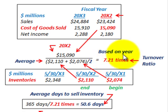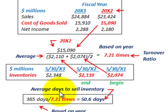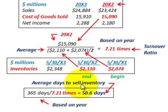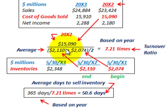Dividing the cost of goods sold for 20x2 by that average inventory gives a turnover ratio of 7.21 times. For the average days to sell inventory, again based on a year, 365 days divided by 7.21 gives 50.6 days as the average days to sell inventory for 20x2.